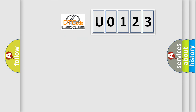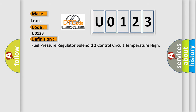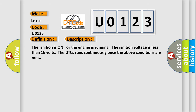So, what does the diagnostic trouble code U0123 interpret specifically for Lexus car manufacturers? The basic definition is: Fuel pressure regulator solenoid 2 control circuit temperature high. The ignition is on, or the engine is running. The ignition voltage is less than 16 volts. The DTC runs continuously once the above conditions are met.